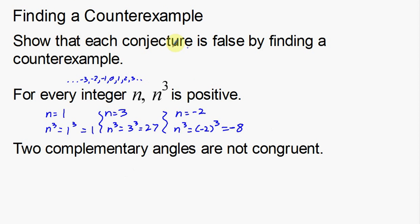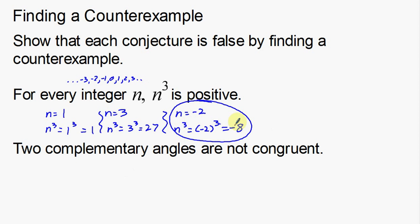We're supposed to find a counterexample to show that this conjecture is false. This right here is my answer: n equals negative 2, and here's the math that proves it — n to the third is a negative number, not a positive number. So there is my counterexample. n equals negative 2 is still an integer, but negative 2 to the third power is a negative number, not a positive number.